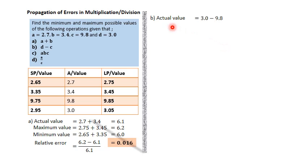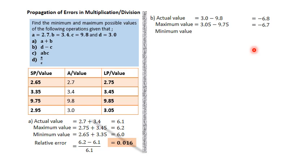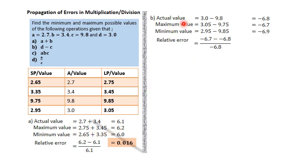Part B: d minus c. The actual value is 3.0 − 9.8 = −6.8. For the maximum value of d − c, we need the bigger value of d and the smaller value of c: 3.05 − 9.75 = −6.7. The minimum value is the opposite: 2.95 − 9.85 = −6.9. The relative error is (−6.7 − (−6.8)) ÷ (−6.8) = 0.015.